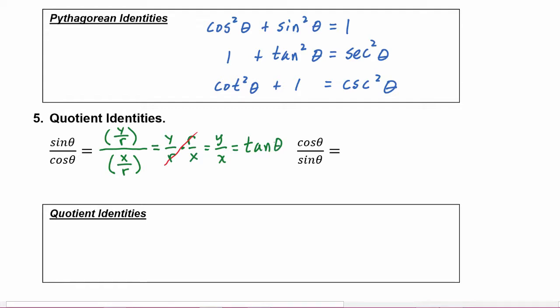So we just learned our first quotient identity: tangent of theta is equal to sine theta over cosine theta.